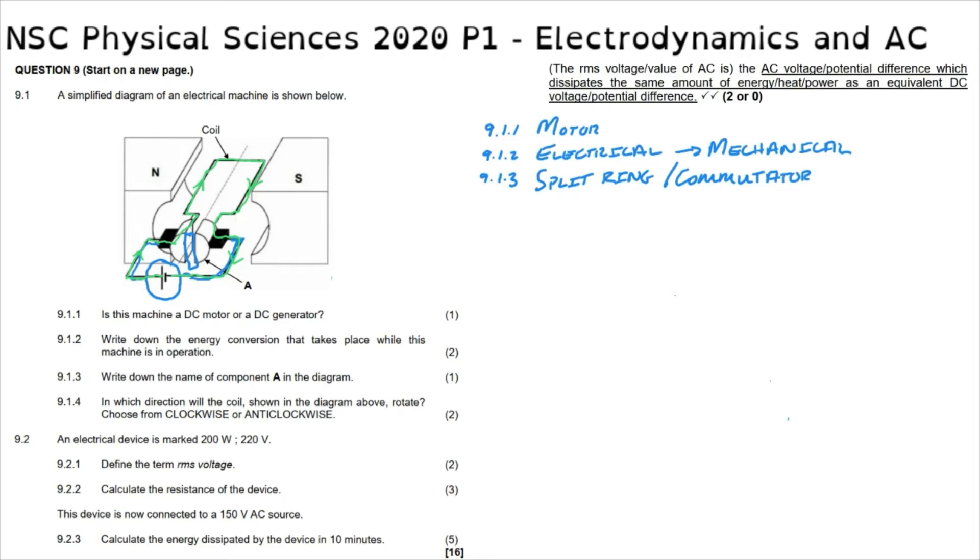Once we have an understanding for the direction that the current is flowing in, we can then also see that the external magnetic field is directed from north to south. We have the current that is flowing essentially into the page. We have the external magnetic field that is directed from north to south. Then using our left-hand motor rule, we can see that the force is going to be exerted downward on this side of the coil and upward on this side of the coil. This is determined by pointing your middle finger in the direction of the current, your index finger in the direction of the magnetic field, and then your thumb points in the direction of the force.